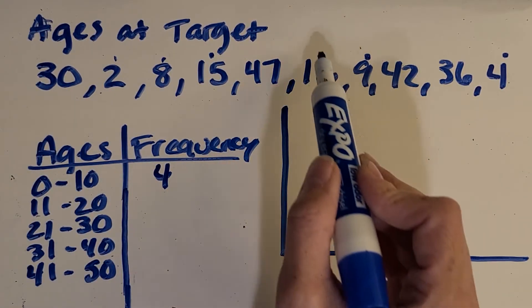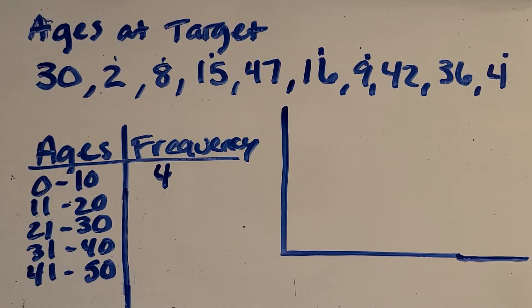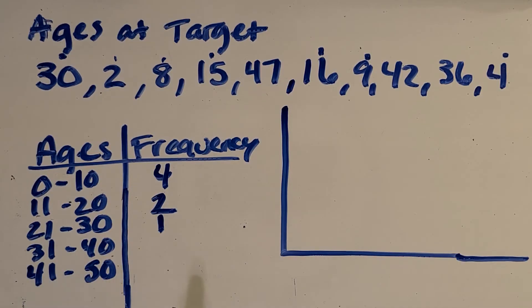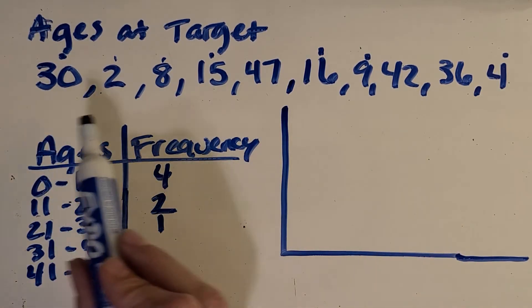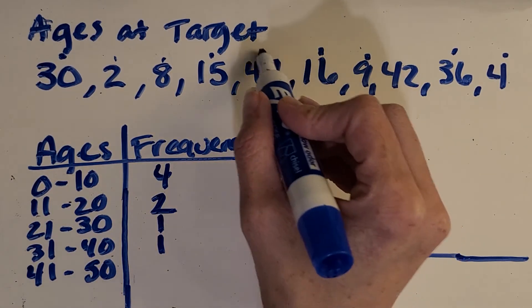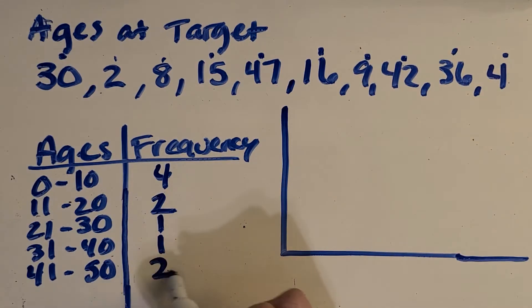15 and 16. Is that it? Yep, I think so. So two of those. 21 to 30. Just one. And then 31 to 40. I'm seeing that one. And then how many in the 41 to 50 range? You got it too.